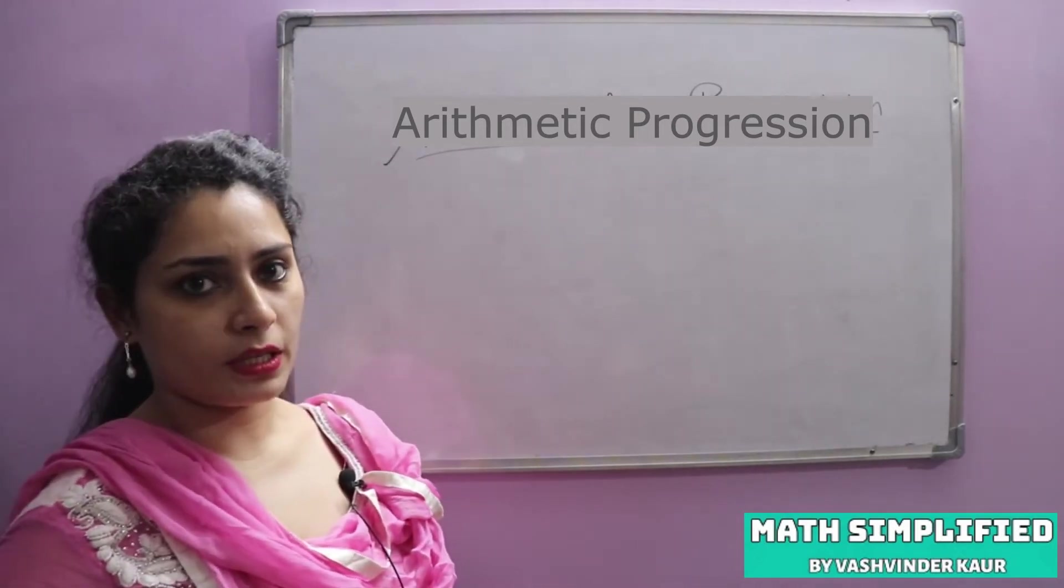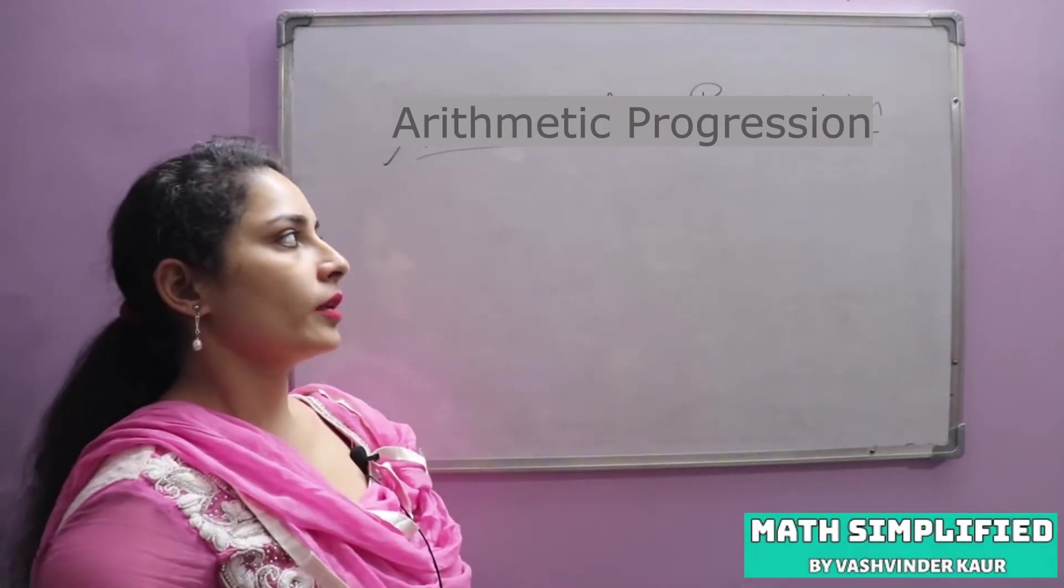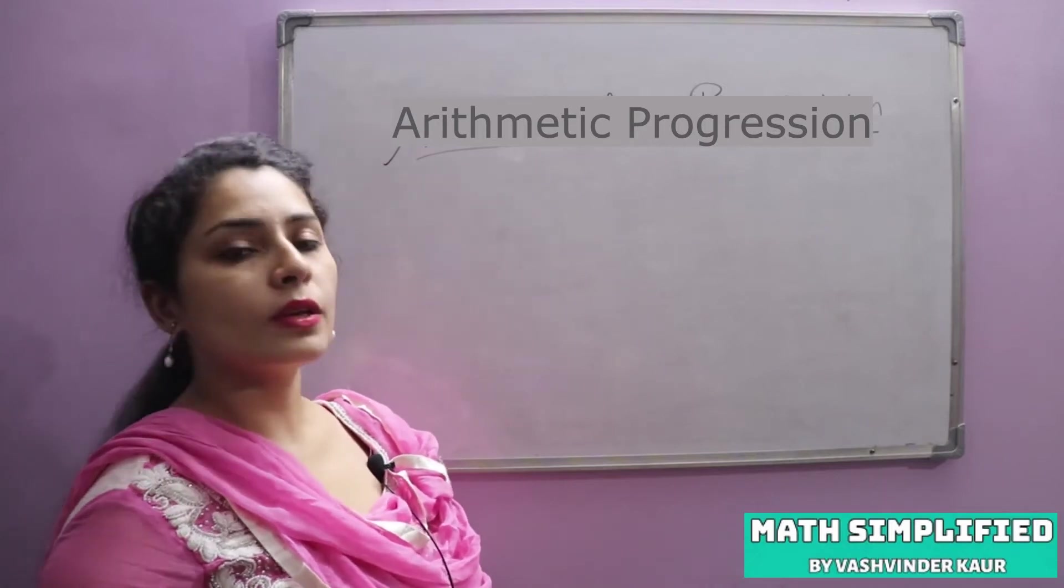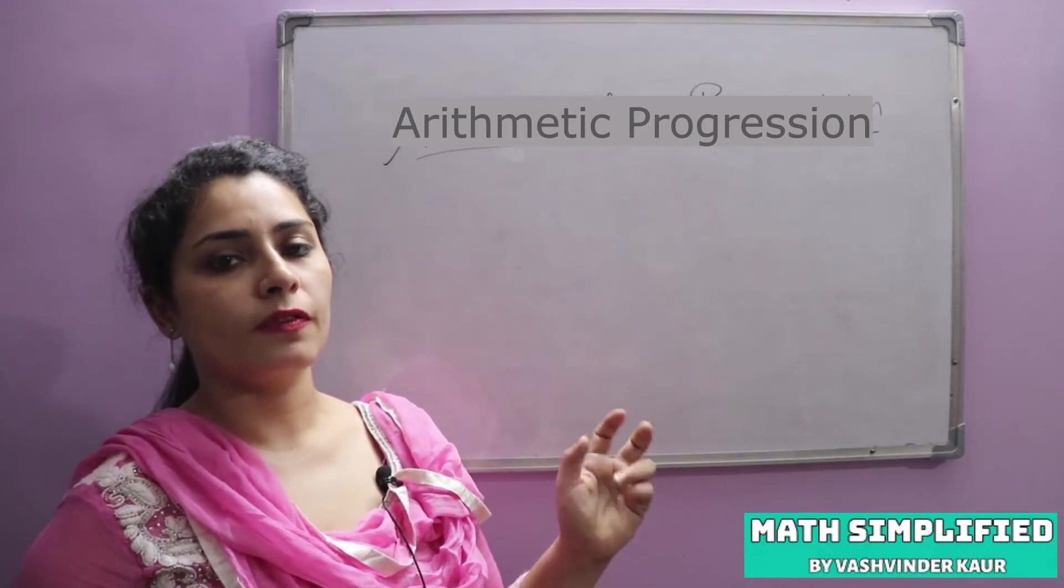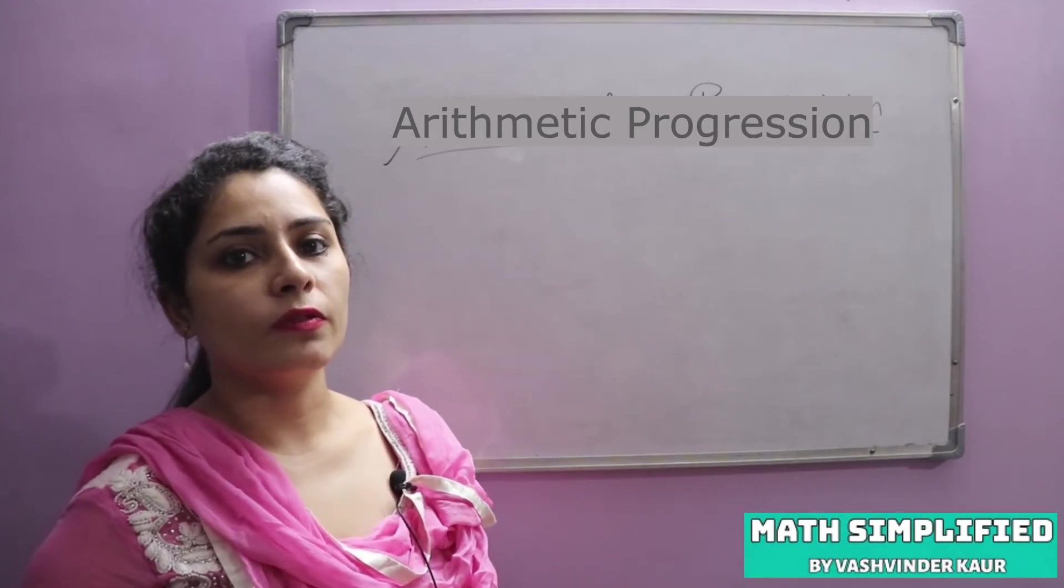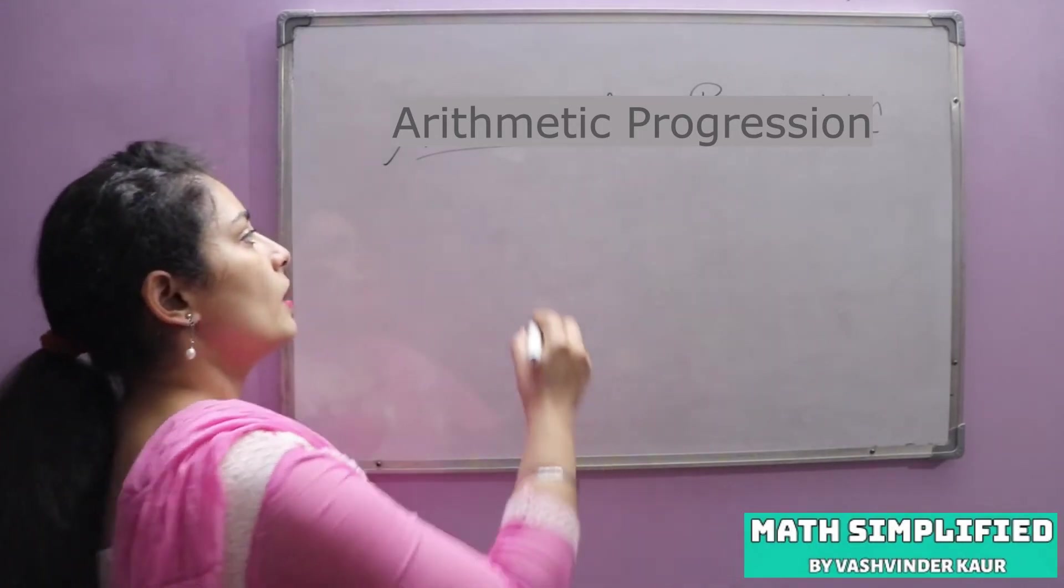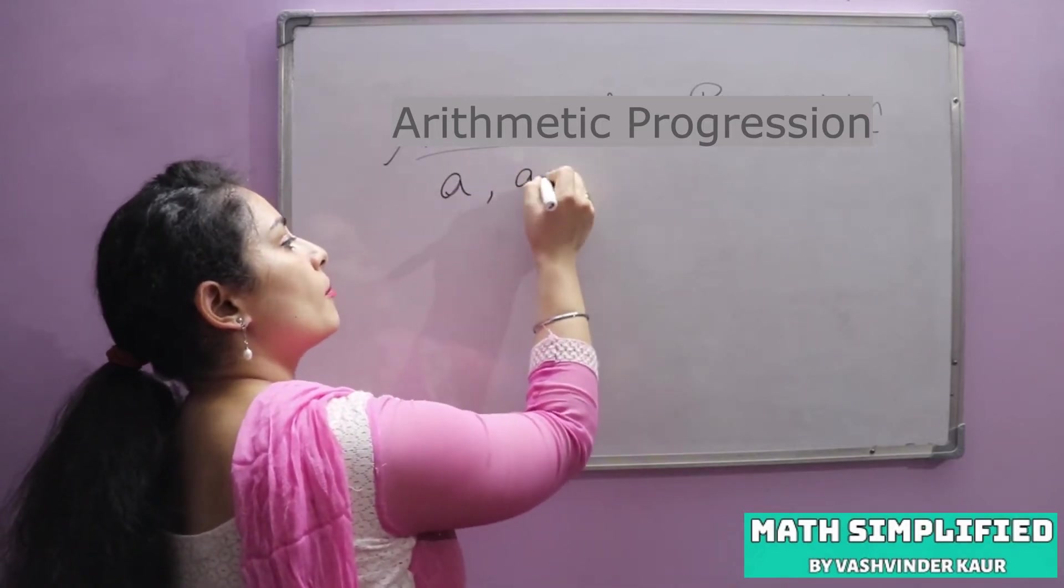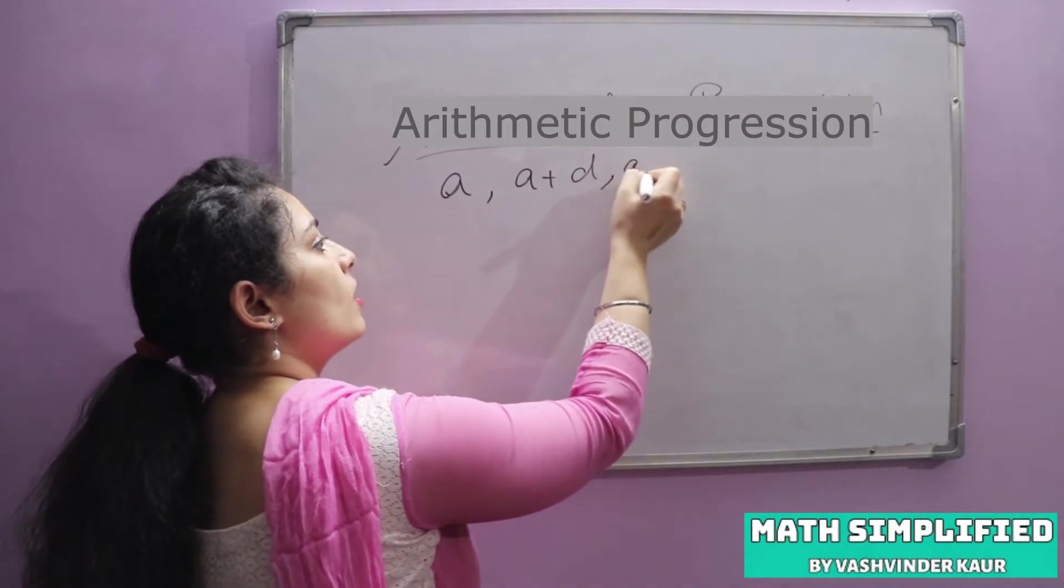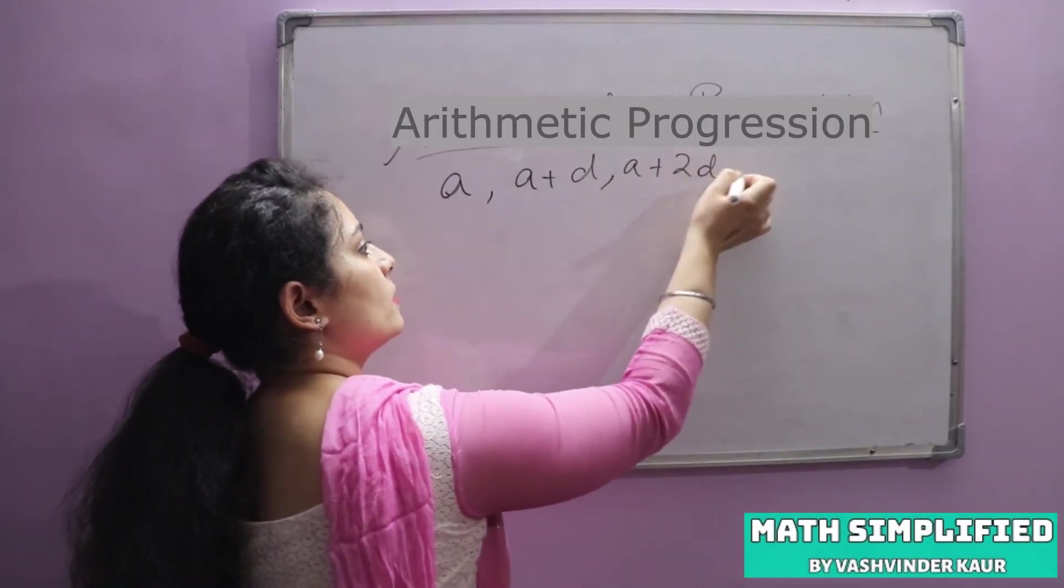First of all, tell me what is AP. So AP means a sequence of numbers in which each number differs from the preceding one by a constant quantity. It means that every number, each same number is added. That is called common difference.